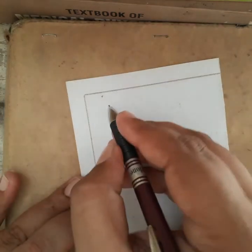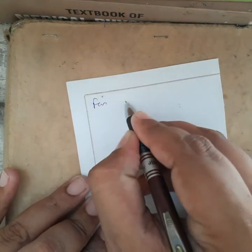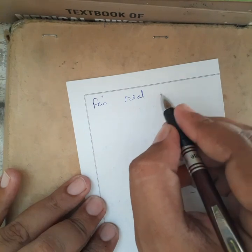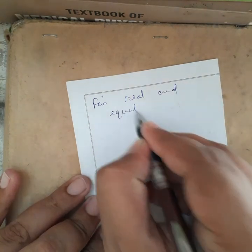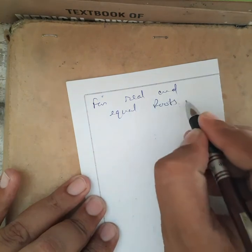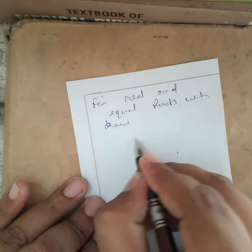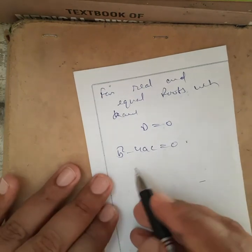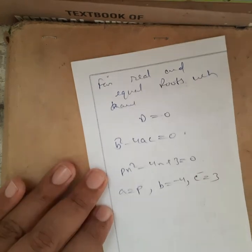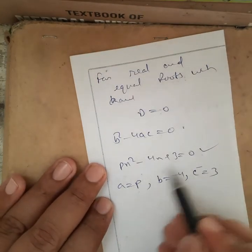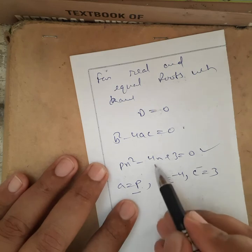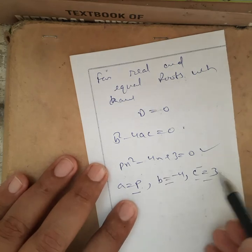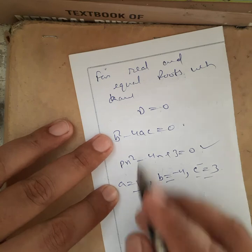Now we will move to question number four. In question number four, you have to determine the value of p, and you have been given that your roots are real and equal. So for real and equal roots, we have D = 0, that is b² - 4ac = 0. Now your equation is px² - 4x + 3 = 0. So the value of a is p, the value of b is -4, and the value of c is 3.